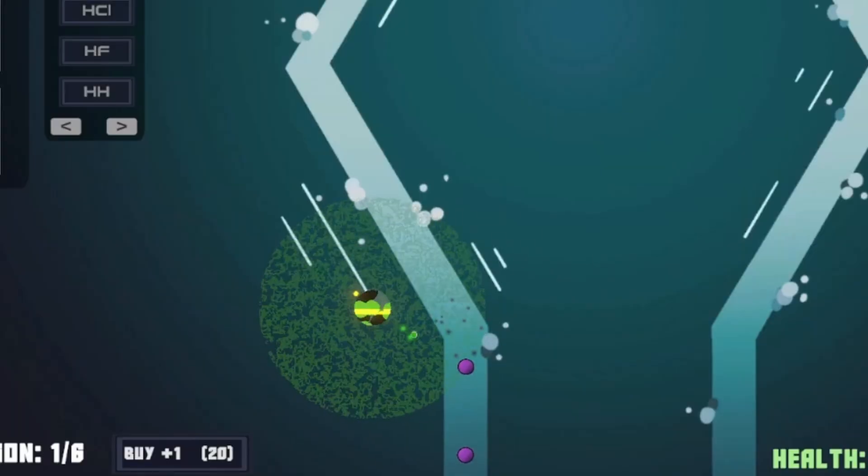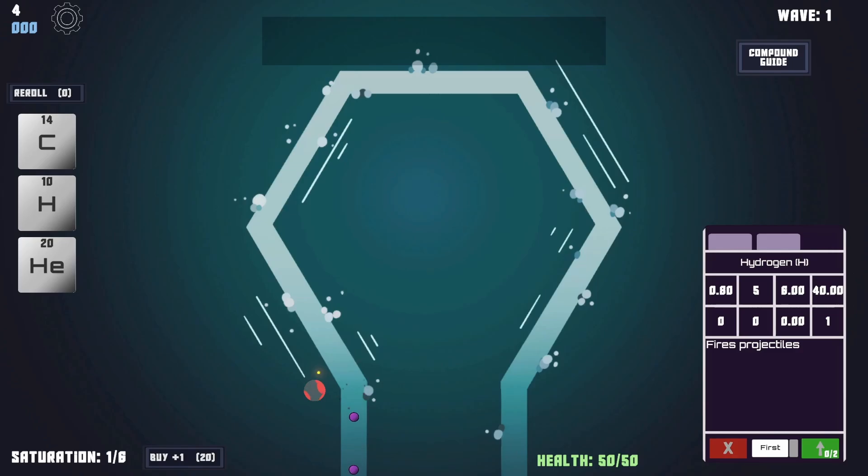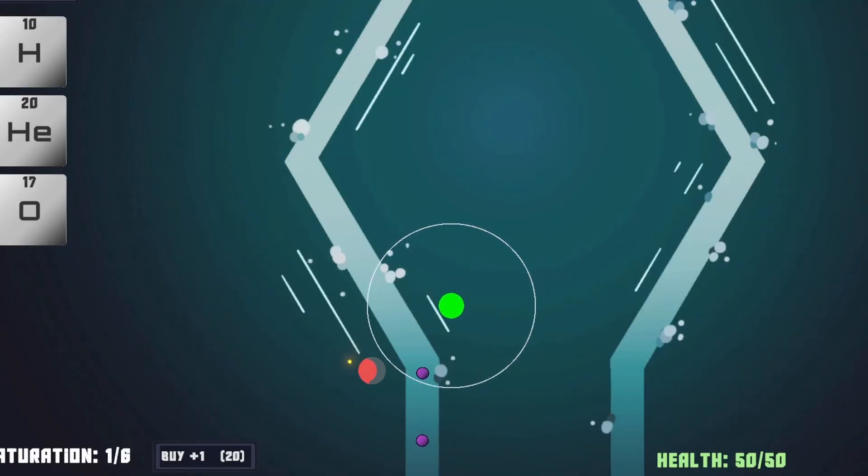What if, in addition to emergent properties of compounds, we gave each atom itself a unique property that the compounds inherit? Fulfilling this task is the main feature of this update, but before we get into that, there are a few small things I want to fix first.